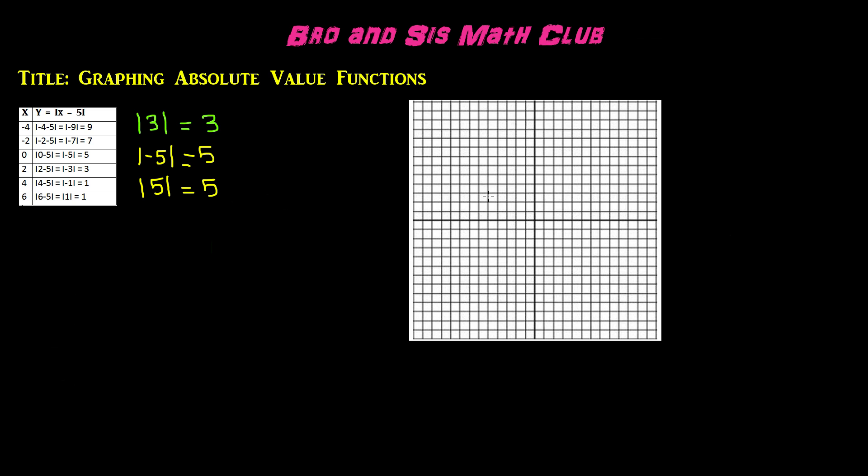Let's go ahead and graph this. We have the origin here. We have negative 4, and then up 9 units. So, here is our first point.